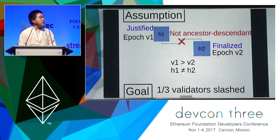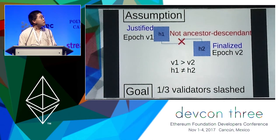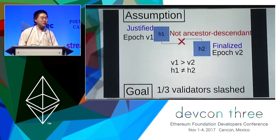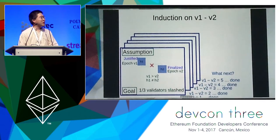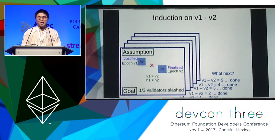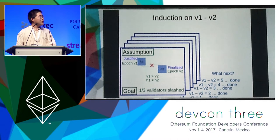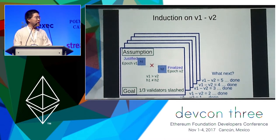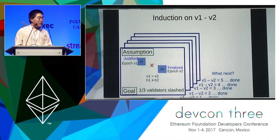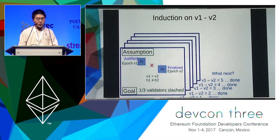H1 is finalized, and in particular it has to be justified as well. I'm weakening the conditions and preparing for a mathematical induction — basically repeating similar proofs again and again. When the difference of epochs is one, two, three, four, I repeat the proofs. And then I ask: what about six, seven, and so on? But in each case, I can assume all previous cases are already solved.